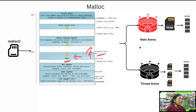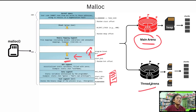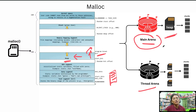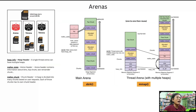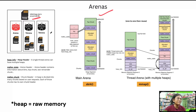Inside the heap, memory segments are arranged using a data structure known as an arena. There are two types of arenas: the main arena, created for your main thread, and the thread arena, created for sub-processes and background threads. The main arena has only one heap, while the thread arena can have multiple heaps which can be memory-mapped via virtual memory. These heaps are further divided into chunks — allocated chunks, free chunks, top chunk, and last remainder chunk.